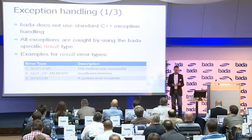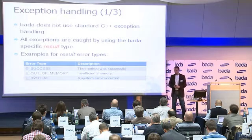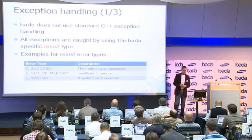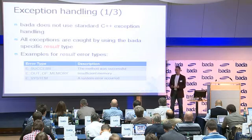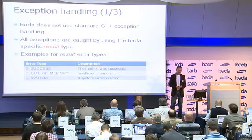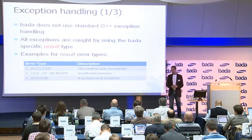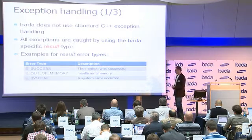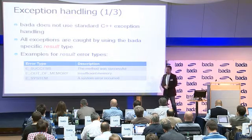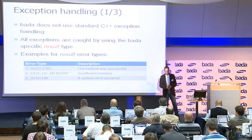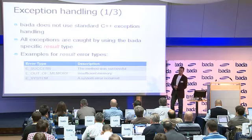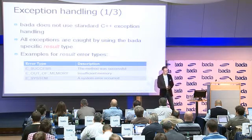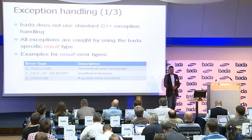The solution we came up with is our own proprietary return type called the `result` type, which you can see up here. Methods can return this result type and you can query it to identify if an exception happened or not. There are various result types available — for example: success when everything went fine, out of memory when there wasn't enough memory, and system when some sort of system error occurred. There is a huge list of different error types you can query against.